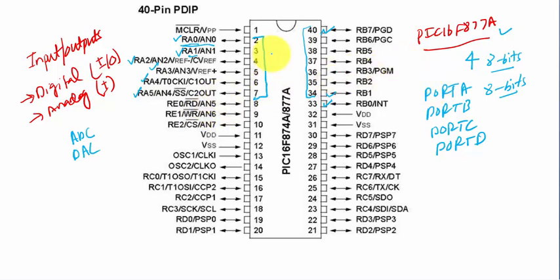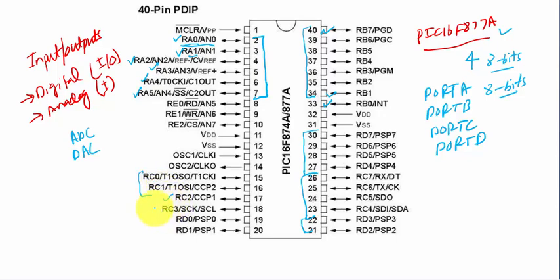The PIC 16F877A has four ports: Port A, Port B, Port C, and Port D. Port E is also present but only 3 bits of Port E are used. In this video, I will show how to use these pins as digital input or digital output. I assume you are using MicroC for PIC to write your program.